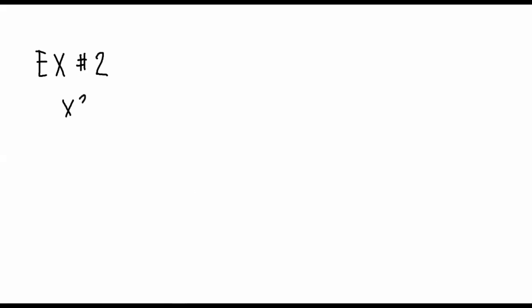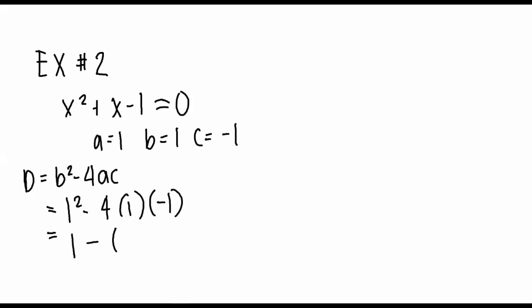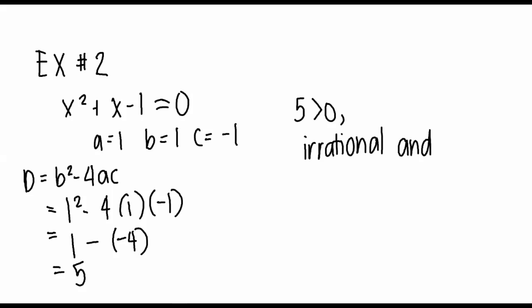Now let's go on to our example number two, which is x squared plus x minus 1 equal to zero, where a is equal to 1, b is equal to 1, and c is equal to negative 1. We have 1 squared minus 4 times 1 times negative 1, which is equal to 5. Since 5 is greater than zero, our roots are irrational and unequal.